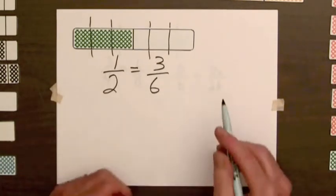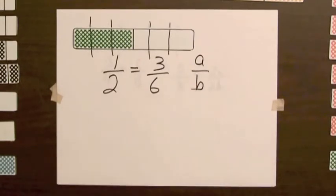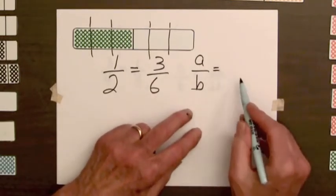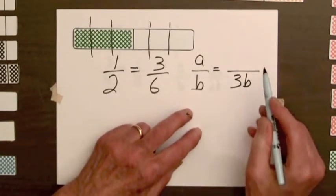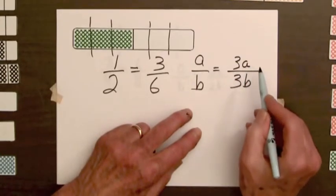In general, for any fraction A over B, by tripling the total number of parts, we triple the number of shaded parts. While multiplying the total number of parts by three also triples the number of shaded parts.